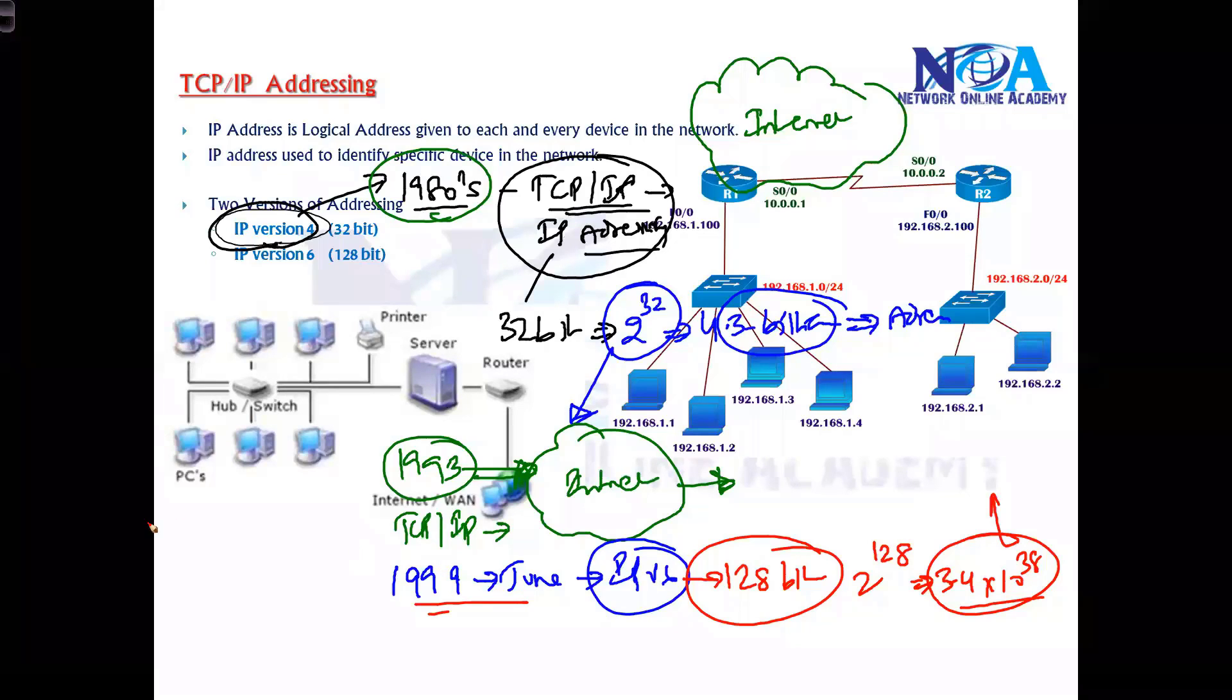They came up with this solution. Additionally, we still use IP version 4 because they came up with another solution called NAT. We'll talk about this in a separate section. NAT allows thousands of users to access internet with only one IP address.